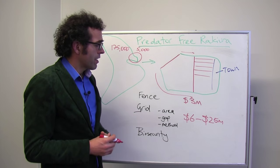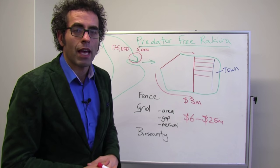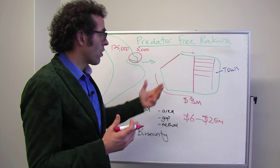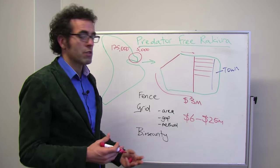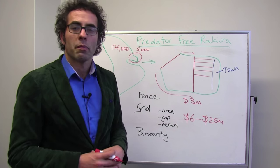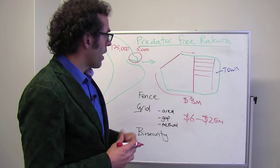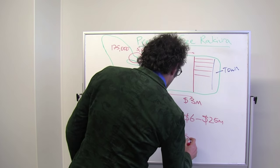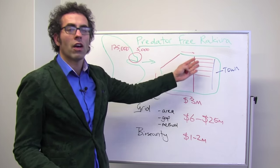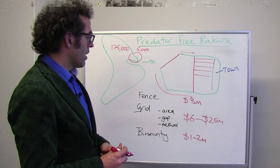The last element of the program is really making sure that no nasty pests can reinvade the island after we've got rid of them all. So we have to have a system of biosecurity in place to make sure that rats, possums, and cats can't get back out into the environment. And that would cost probably between $1 and $2 million, again depending on the size of the area that we're trying to eradicate.